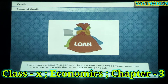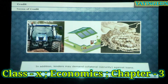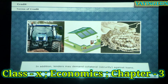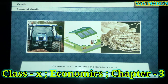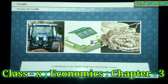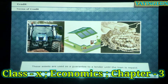Every loan agreement specifies an interest rate which the borrower must pay to the lender along with the repayment of the principal. In addition, lenders may demand collateral or security against loans. Collateral is an asset that the borrower owns — such as land, building, vehicle, livestock, deposits with banks, etc. — used as a guarantee to a lender until the loan is repaid.